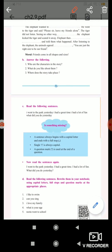Read the following sentences. Rewrite them in your notebook. Using capital letters, full stops and question marks at the appropriate places. First, I like to swim. Second, can you sing? Third, I love my family. Fourth, what is your age? Fifth, Neeta went to school.